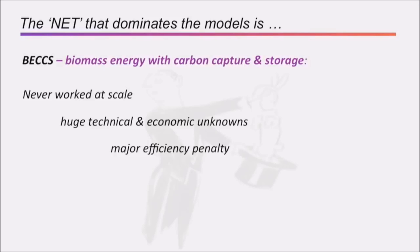There are massive technical and economic unknowns and a huge efficiency penalty — probably somewhere between 15% and 25% less efficient because of this additional process. And there's limited biomass availability. The aviation industry wants to run its planes on biomass. The shipping industry wants to run its ships on biomass. We already have about 5% to 7% of our car fuel running on biomass, and we want to feed 9 billion people. Perhaps it would be nice to have some parts of the planet that weren't just for our immediate use — natural parks or forests — that weren't there just to help us.